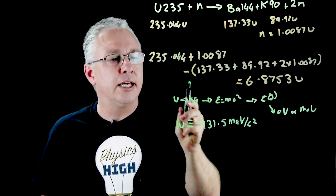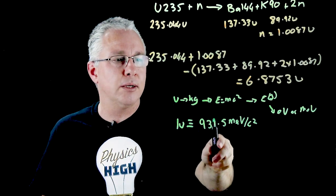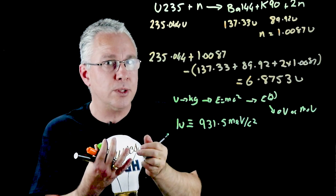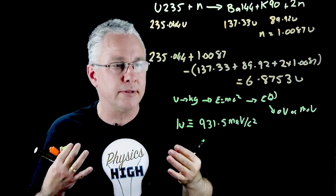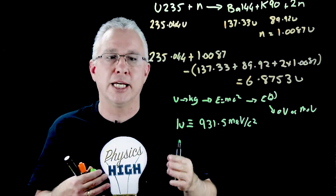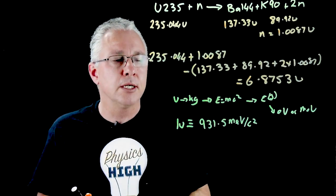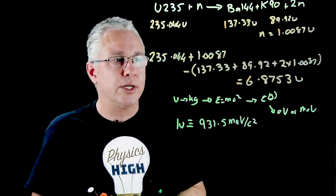If I have a mass of 931.5 mega electron volts per c squared and I convert that into energy, because mass and energy are equivalent by E equals mc squared, then I get 931.5 mega electron volts. So I can just simply drop the c squared off.